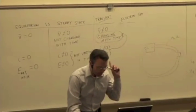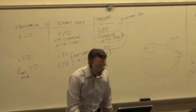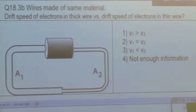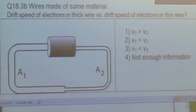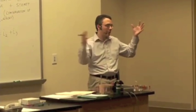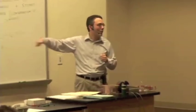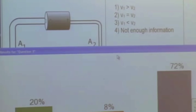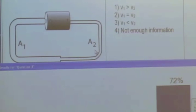So we know the currents are equal. What about the drift speeds? The area is bigger in wire one, but the number of electrons per second has to be the same in both wires — otherwise charge would build up at that node and you wouldn't have a steady state. The velocities are different: the drift speed in wire two, the thinner wire, has to be bigger than the drift speed in wire one.